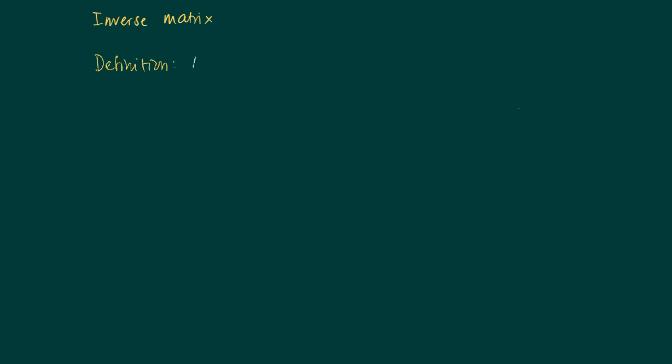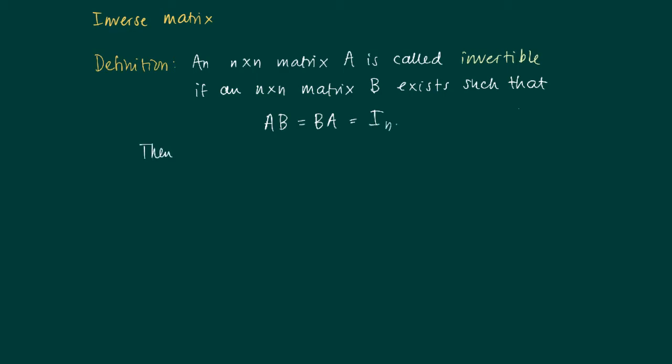An n×n matrix A is called invertible if another n×n matrix B exists such that if we form the products AB and BA, they are equal and result in the identity matrix, the n by n identity matrix. We write B as A⁻¹, or the inverse of A.